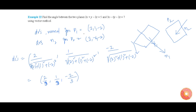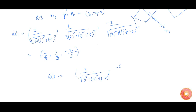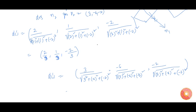Now for the normal of plane P2, the DCs are equal to 3 by root of (3 squared plus minus 6 squared plus minus 2 squared), which equals 3 by 7, comma minus 6 by 7, comma minus 2 by 7. Now we know the DCs of both normal lines.